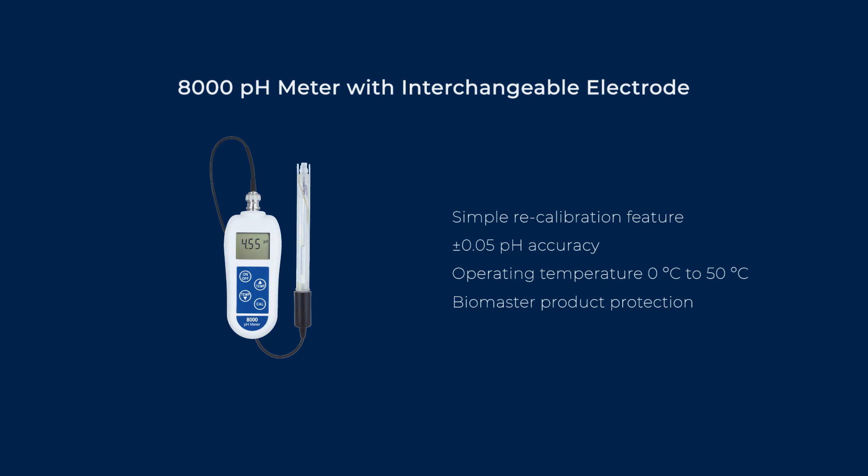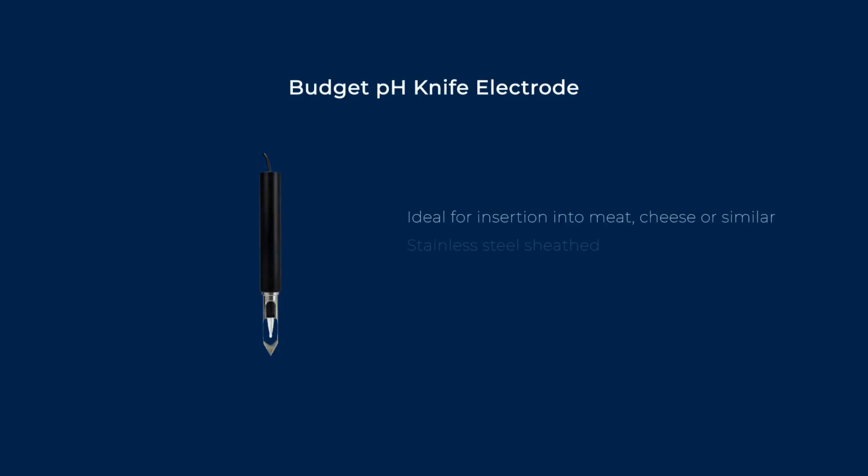In addition, it enables the user to purchase specific types of electrodes required for certain applications, such as a knife-shaped electrode for meat and cheese.